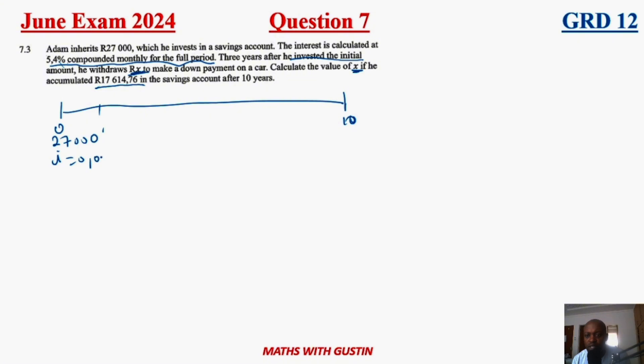The interest rate, your i, is going to be 0.054. Therefore, at some point after three years, which is in this case here, he withdrew an x amount of money. We don't know how much, but this x amount of money also gained interest. At the end of this, he had an amount of 17,614.76.